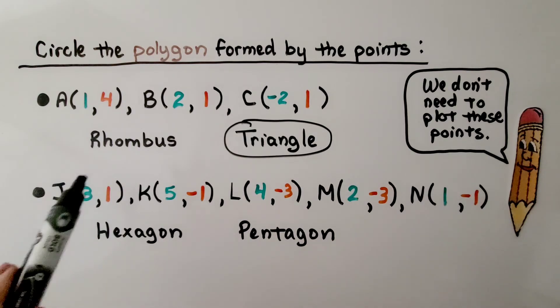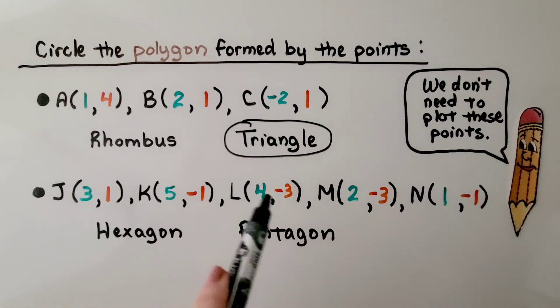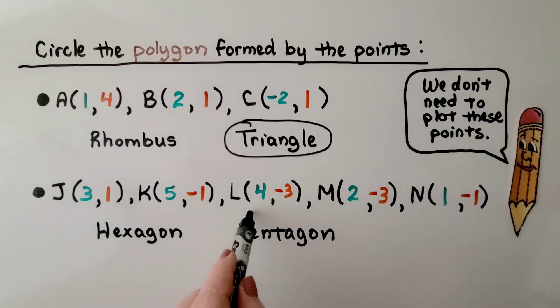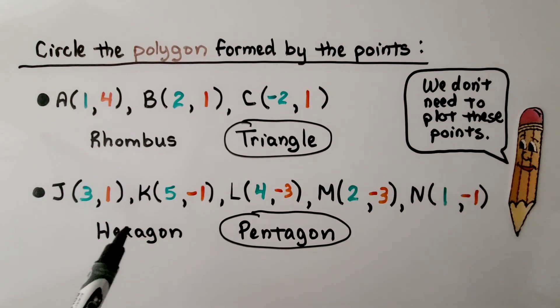Here we have 1, 2, 3, 4, 5 points. That means there must be 5 vertices. Well, that must be a pentagon. So, if you said pentagon, you're right. It wouldn't be a hexagon. A hexagon has 6 vertices.